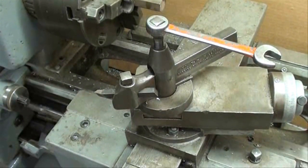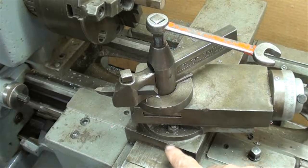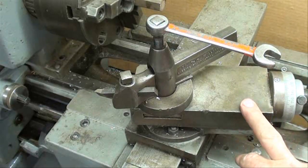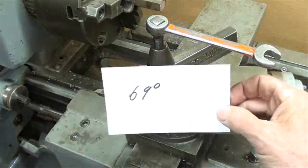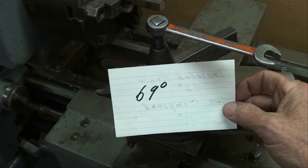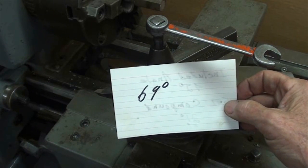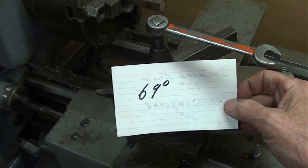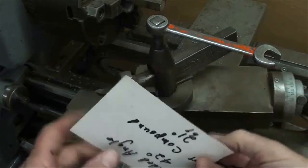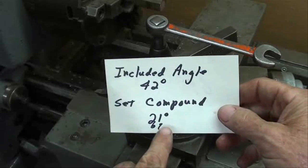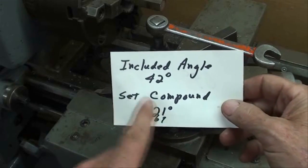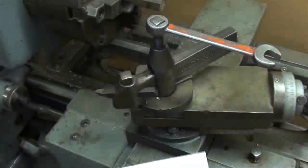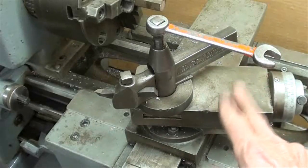Now the way this tailstock is numbered, in order to get my 21 degrees, I actually had to set it at 69 degrees, which is what, I think that's the complement of, if I remember my geometry complement or supplement, I think the complement of the angle 21 degrees is 69, because you add the two together and you have 90. So that's the position of the compound.